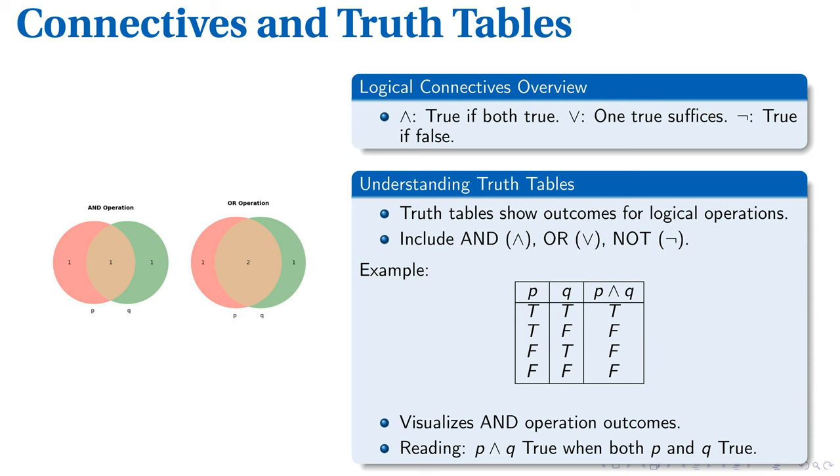Logical connectives, including AND, OR, and NOT, form the backbone of propositional logic. Each connective performs a distinct role in combining propositions. Specifically, AND demands both propositions to be true, OR requires at least one proposition to be true. NOT inversely mirrors the truth value of a single proposition.